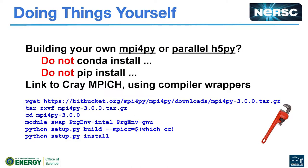A couple of things special about Cori that you need to know: you should never 'conda install mpi4py'. If you want to use MPI from Python, don't ever do 'conda install mpi4py' — it won't work right. It might look like it works on one node, but then on two nodes it'll make no sense. What you need to do is compile mpi4py against the Cray MPI stack. It's very easy — just download the package, unpack it, swap the module to use the GNU compiler, then run 'python setup.py build' and tell it where mpicc is.